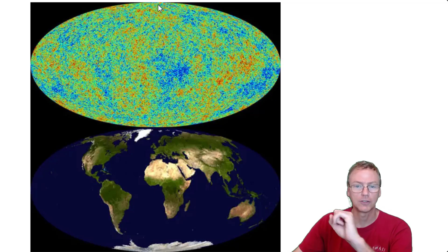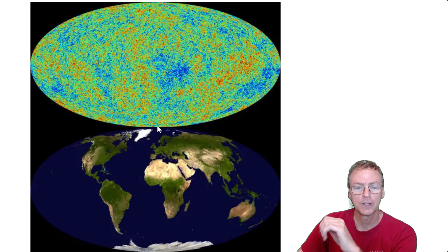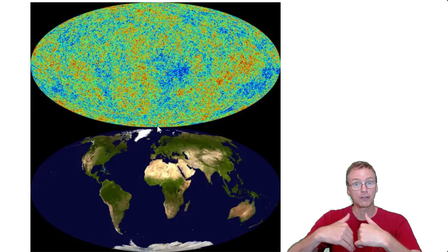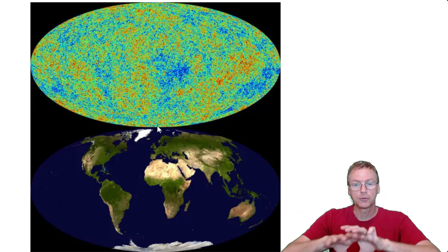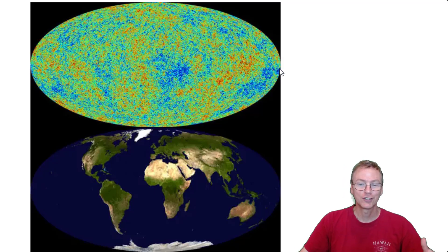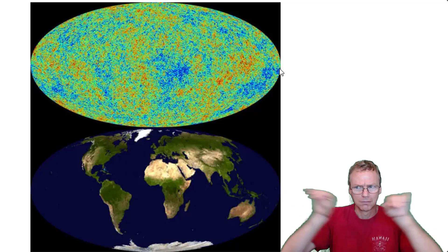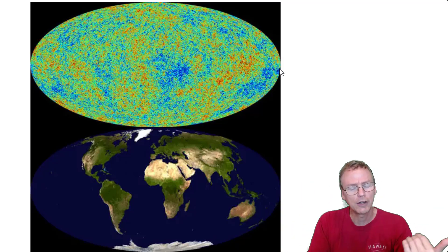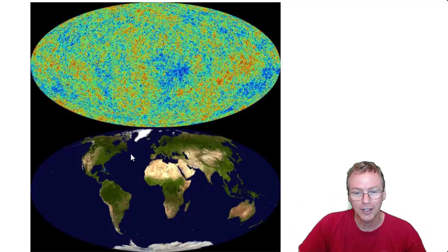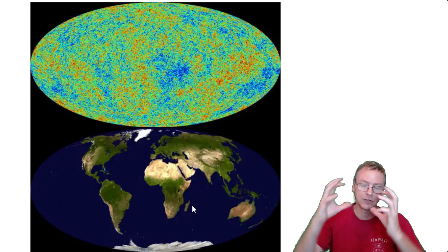So this is looking straight up at Polaris. And down here, this is the South Pole of the Earth. It is much wider across the equator because, of course, the equator is wider. So this is us looking down at the Earth as a sphere.